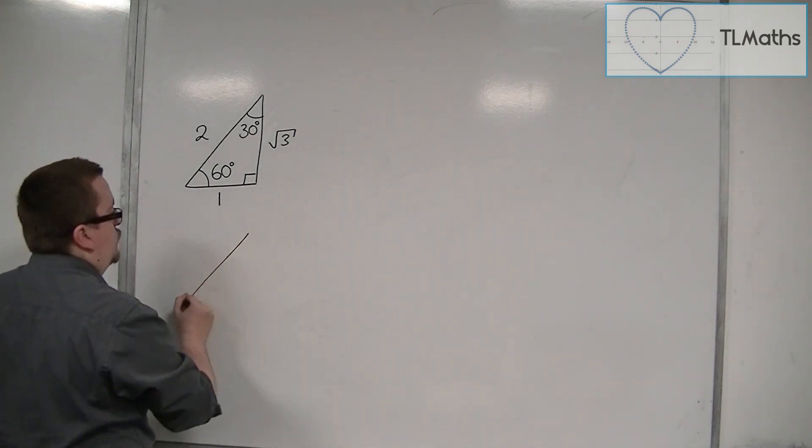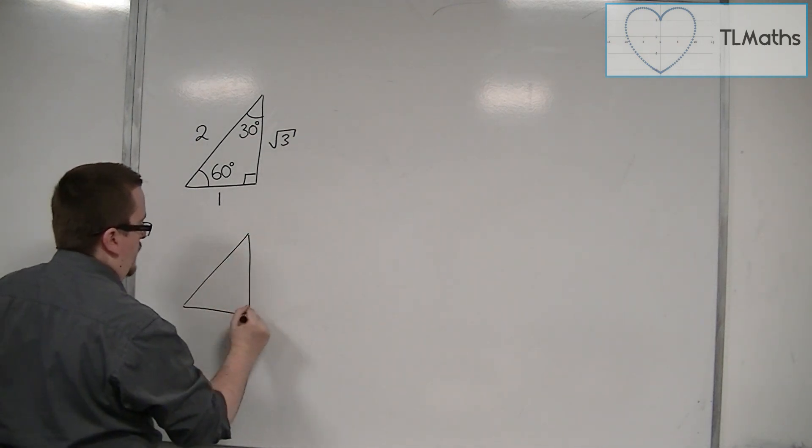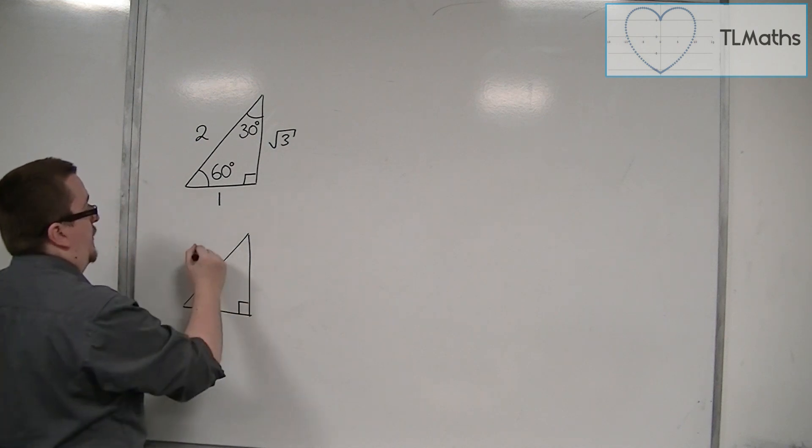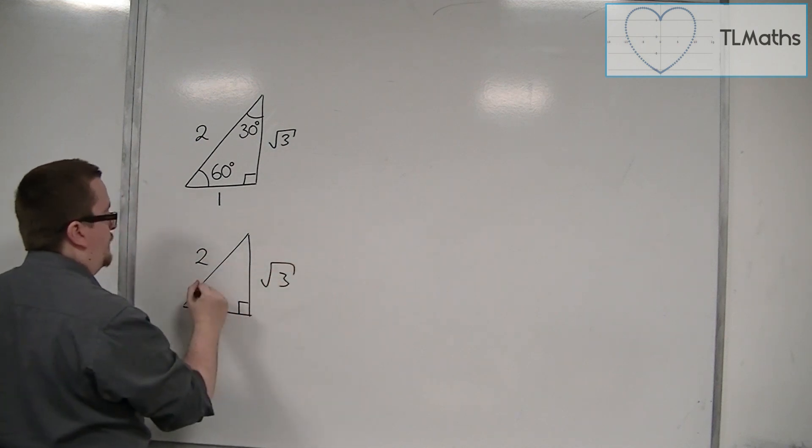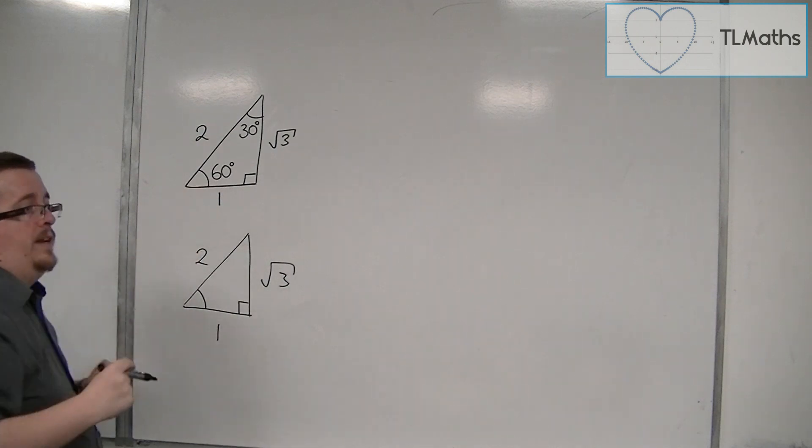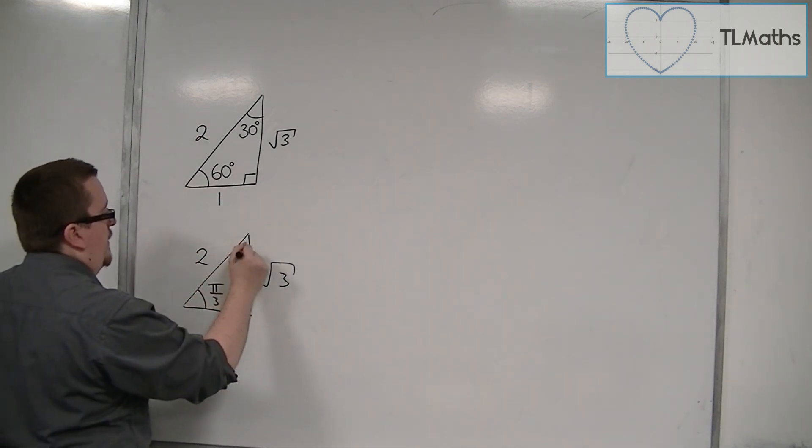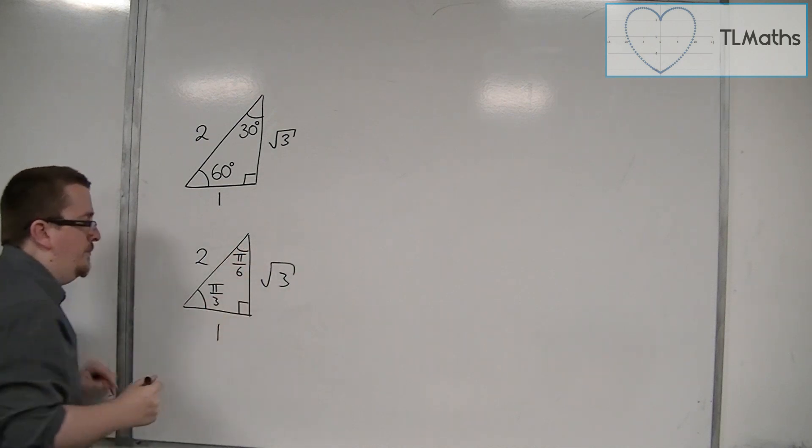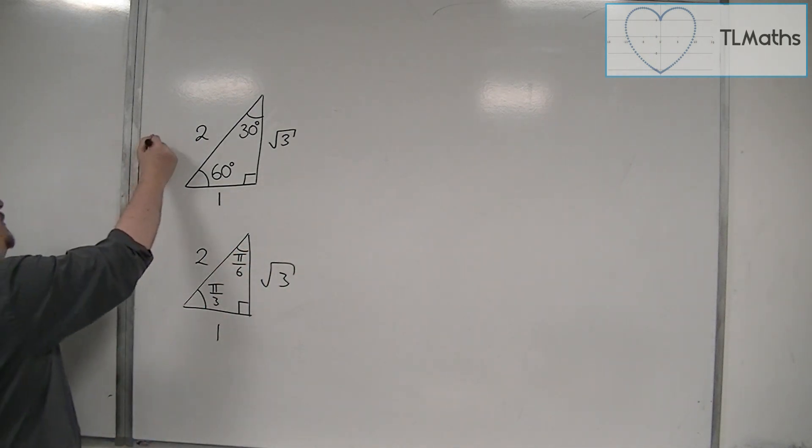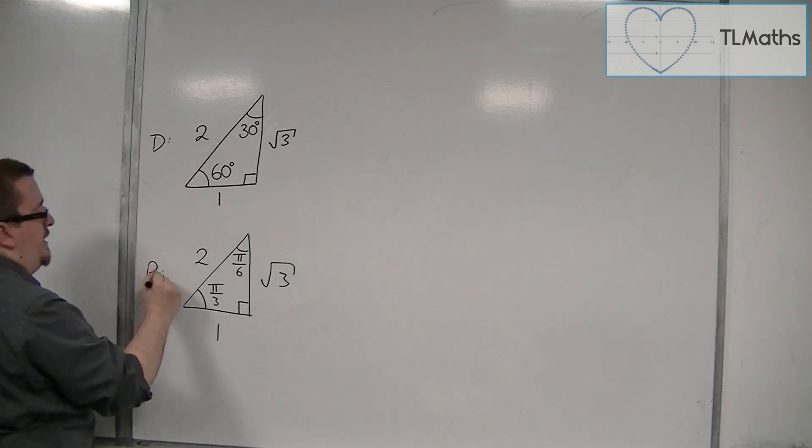Now, converting that into radians, what we would have is the same length sides, but 60 degrees is pi over 3, and this angle is pi over 6. So this is just the degrees version, and this is the radians.